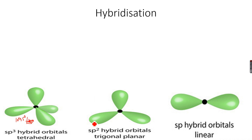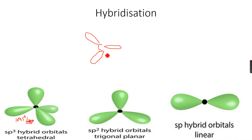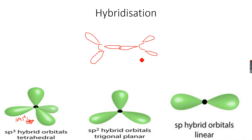Now let's move to SP2 hybridization. So let's say this is a carbon — it will form an SP2 hybridized orbital here, an SP2 hybridized orbital here, and an SP2 hybridized orbital here. And then there's another carbon atom which has an SP2 hybridized orbital like this, an SP2 hybridized orbital like this, and an SP2 hybridized orbital like this.